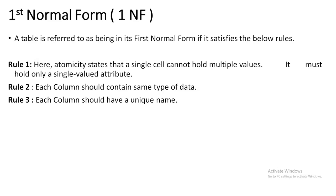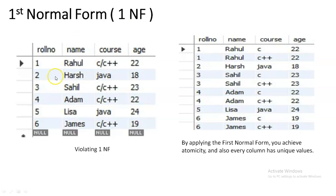We will see with an example. In the first table, you can see that one particular cell is having multiple values. Multiple values should not be present in a single cell. If it is like this, it means that your table is violating the first normal form. In the next example, you can see that each cell is having only one data — this is how your first normal form table should look like.